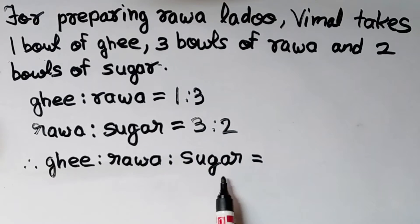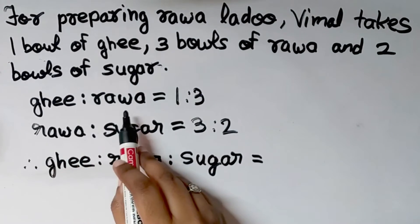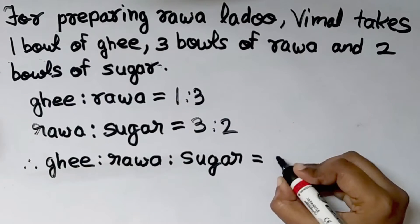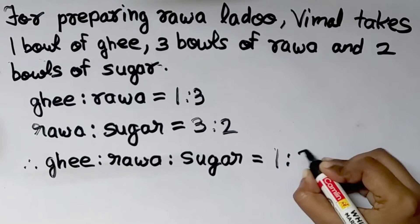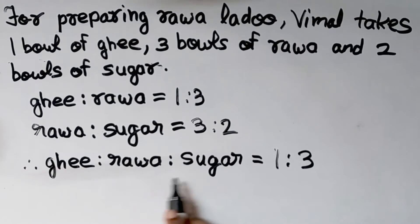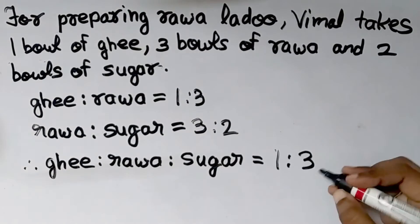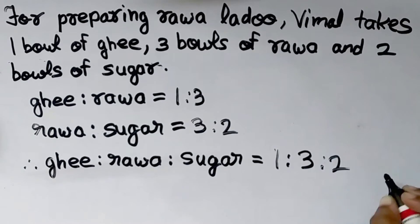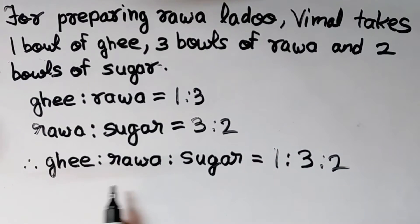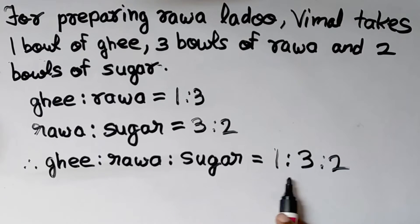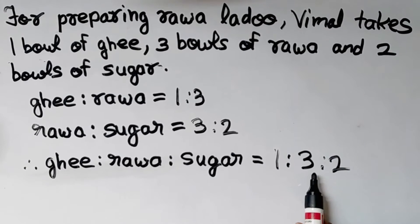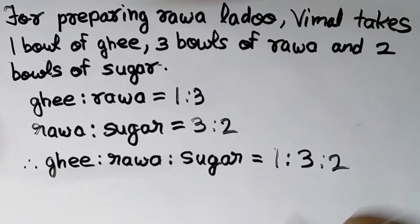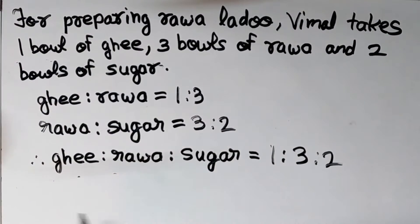Therefore ghee is to rava is to sugar. The ratio of ghee to rava is 1 is to 3, and rava to sugar is 3 is to 2. Since 3 is common, the ratio of ghee to rava to sugar is 1 is to 3 is to 2. This is how you write the quantities in ratio of 3 numbers when 3 or more quantities are given.